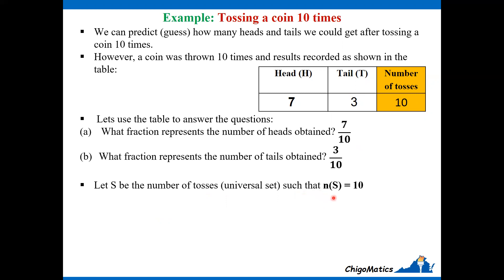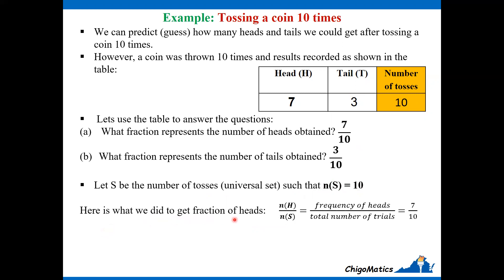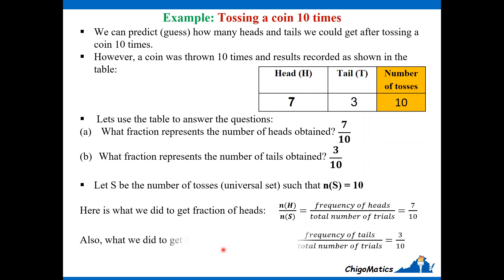Let S be the number of tosses as the universal set, such that the number of elements in set S equals 10. To get the fraction of heads, it was the frequency of heads over the total number of trials. From the table, the frequency is 7 and the total number of trials is 10, so it's 7 over 10. Similarly, the fraction of tails is frequency of tails over total number of trials.